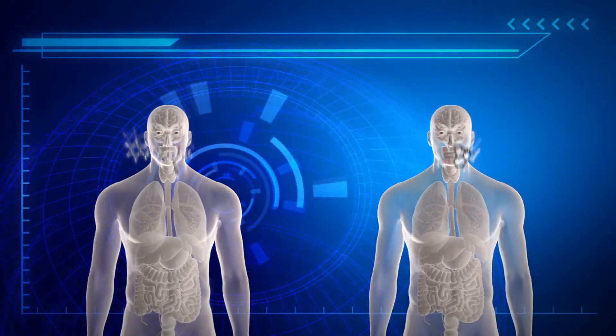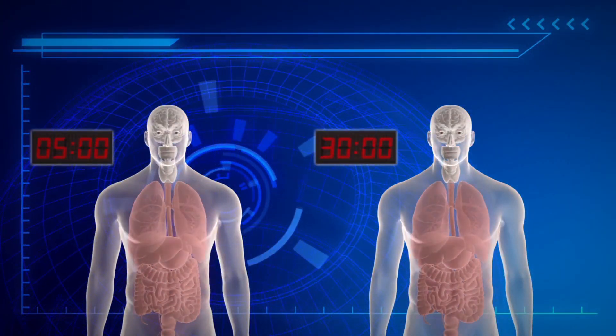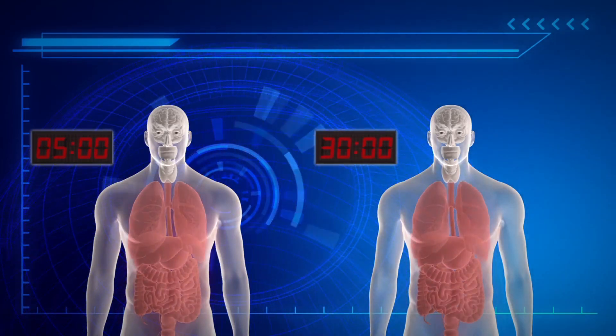Fentanyl is much more potent than heroin, as it only takes about 5 minutes to peak in the blood, whereas heroin takes up to 30 minutes to peak.